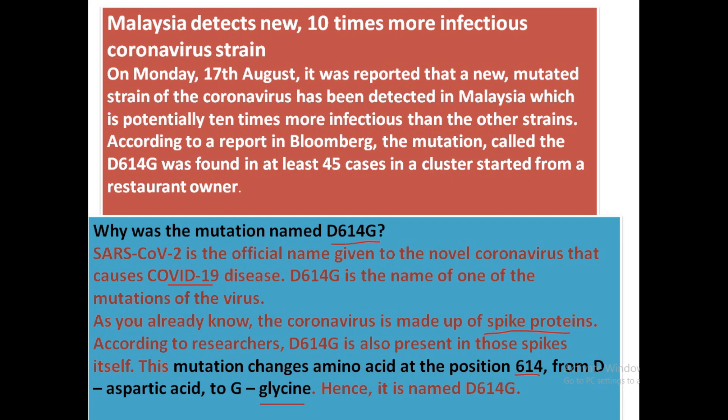The D614G mutation was detected in at least three of the 45 cases in a cluster that started from a restaurant owner returning from India who breached his 14-day home quarantine. That is how the virus spread and how the Malaysian government came to know about it.